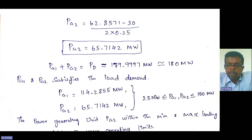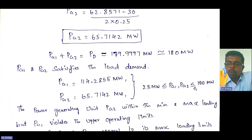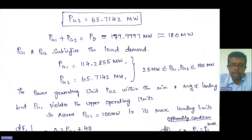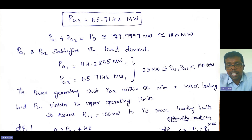Now check the minimum and maximum operating limits: 25 megawatt ≤ PG1, PG2 ≤ 100 megawatt. PG2 satisfies the limit, but PG1 at 114.2855 megawatt violates the upper operating limit of 100 megawatt. So PG1 violates the maximum operating limits.